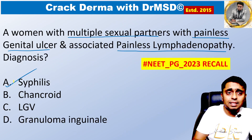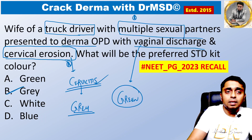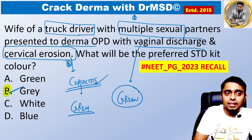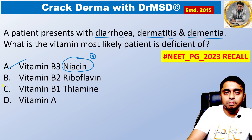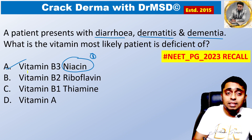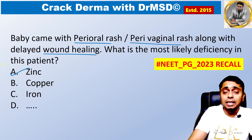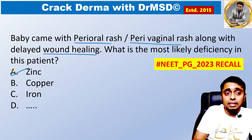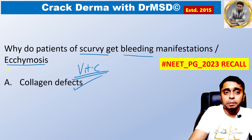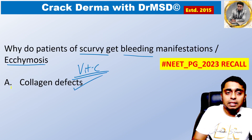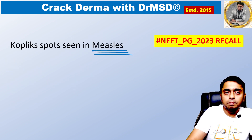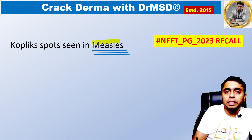This is syphilis. This is grey kit. And this is vitamin B3 or niacin deficiency. And this is zinc deficiency. And this is collagen defects. And Koplik spots are seen in measles.